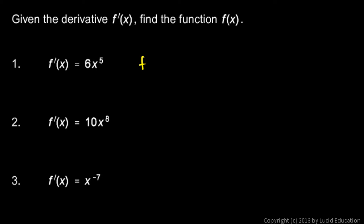f-primed of x is 6x to the 5th, so f of x would have to be x to the 6th. And then we need to say plus c. And these are easy to check - you can just take the derivative of that, and of course, by the power rule, that's 6 times x to the 5th, which is that.